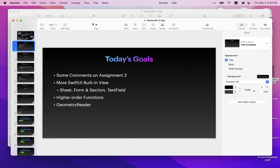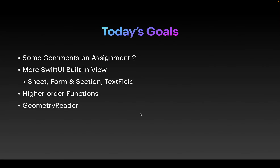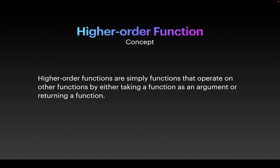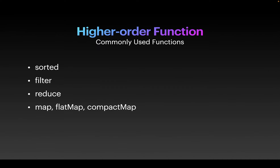Now let's go back to today's main topic: higher-order functions. We're going to majorly focus on an Xcode playground. Higher-order functions are simply functions that operate on other functions — either taking a function as an argument or returning other functions. That's the core of functional programming. If you know Haskell or other pure functional programming languages or LISP, you already know the basic concept. Today we're going to talk about sorted, filter, reduce, map, flatMap, and compactMap.